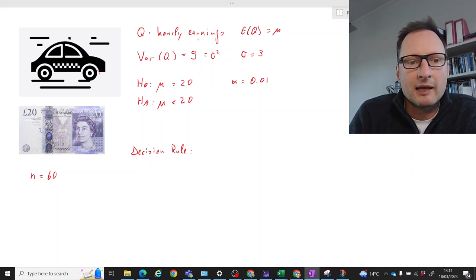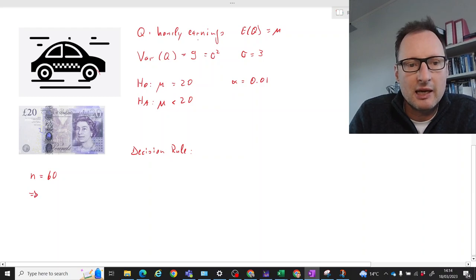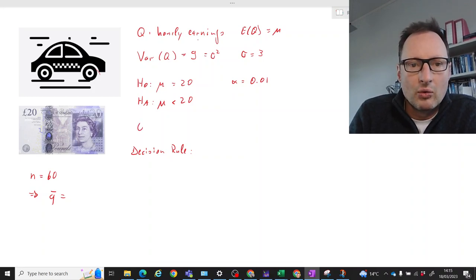The taxi entrepreneur says, okay in your third hour of your shift tell me how much you earn, and we will get from that a sample mean. So we are thinking of a random variable Q bar which is the sample average and we need to think about how this is distributed.